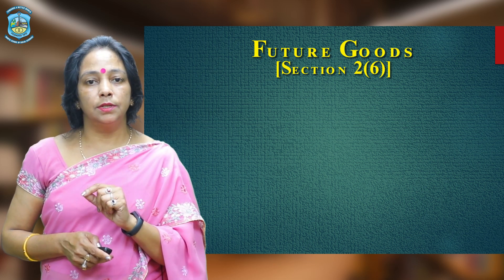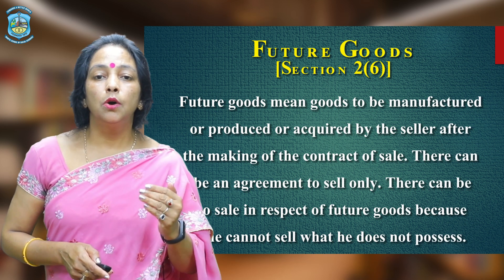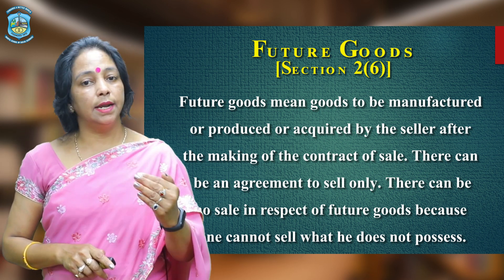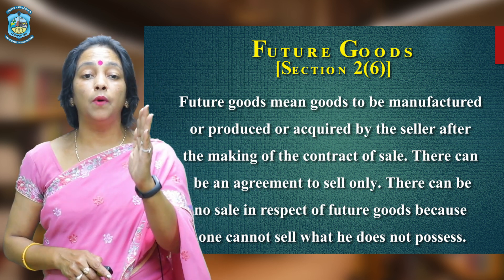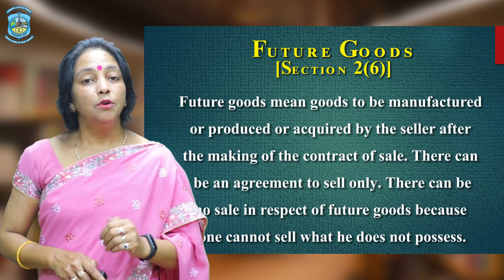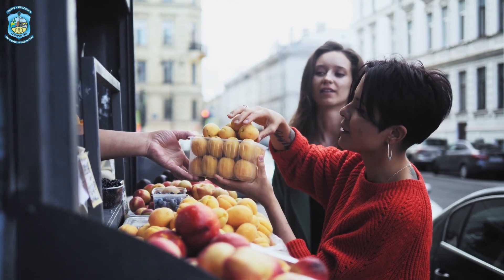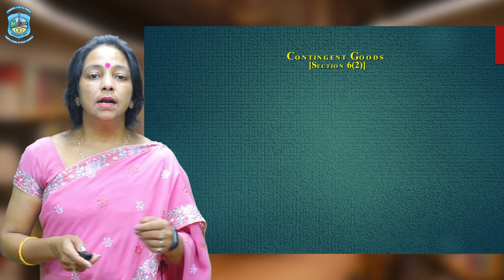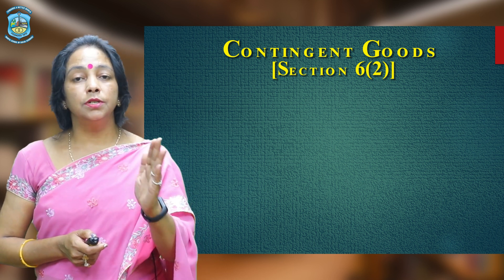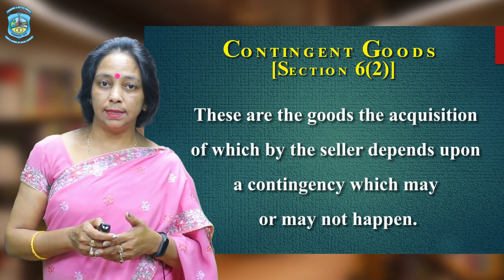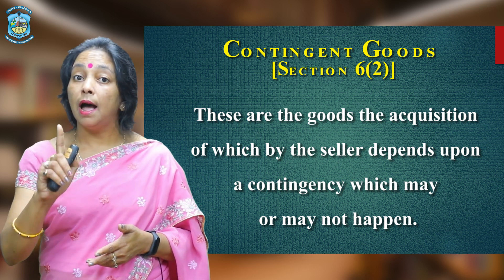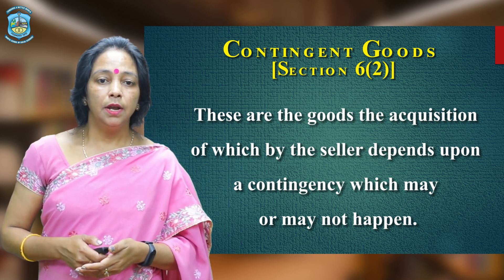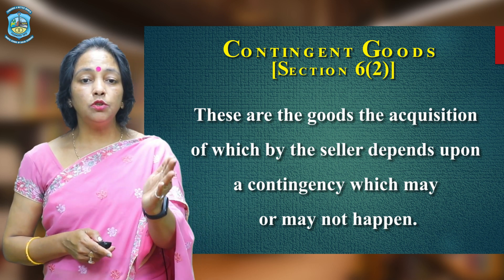Future goods come under Section 2 subsection 6 and means goods to be manufactured, produced, or acquired by the seller after the making of the contract of sale. There can be no sale in respect of future goods because one cannot sell what one does not possess. For example, X agrees to sell Y the mangoes which will be produced in a garden next year — this is a contract of sale of future goods amounting to an agreement to sell. Contingent goods, also part of Section 6, are goods whose acquisition by the seller depends upon a contingency which may or may not happen. For example, A agrees to sell specific goods in a particular ship to be delivered on the arrival of the ship.